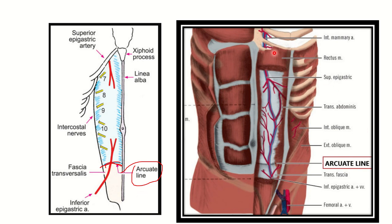In this second picture, we can see the rectus sheath and it gives some tendinous attachments within the rectus abdominis muscle at three places. In the right side panel, we can see the full content of the rectus sheath: the superior epigastric vein and superior epigastric artery, then the inferior epigastric artery and inferior epigastric vein, then the lower five intercostal and subcostal nerves, then the rectus abdominis and pyramidalis muscles. These are the contents of the rectus sheath.